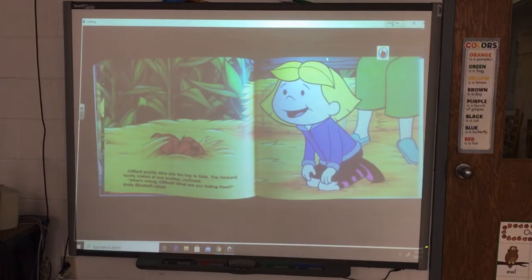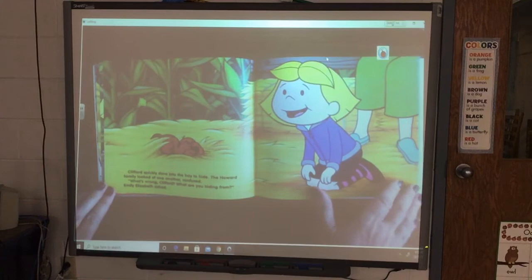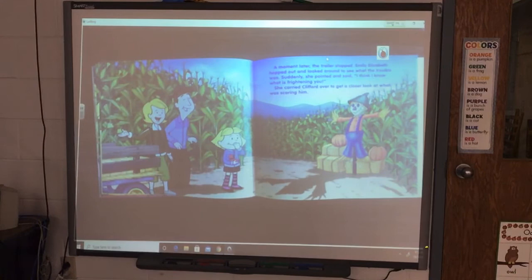Clifford quickly dove into the hay to hide. The Howard family looked at one another, confused. What's wrong Clifford? Where are you hiding from? Emily Elizabeth asked. A moment later, the trailer stopped. Emily Elizabeth popped out and looked around to see what the trouble was.